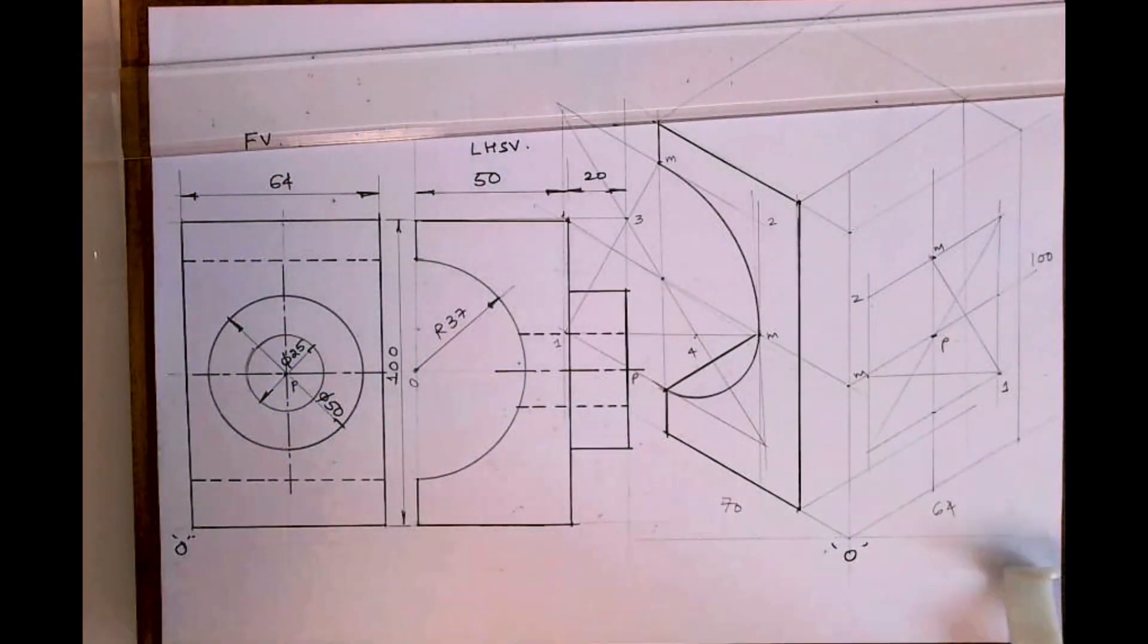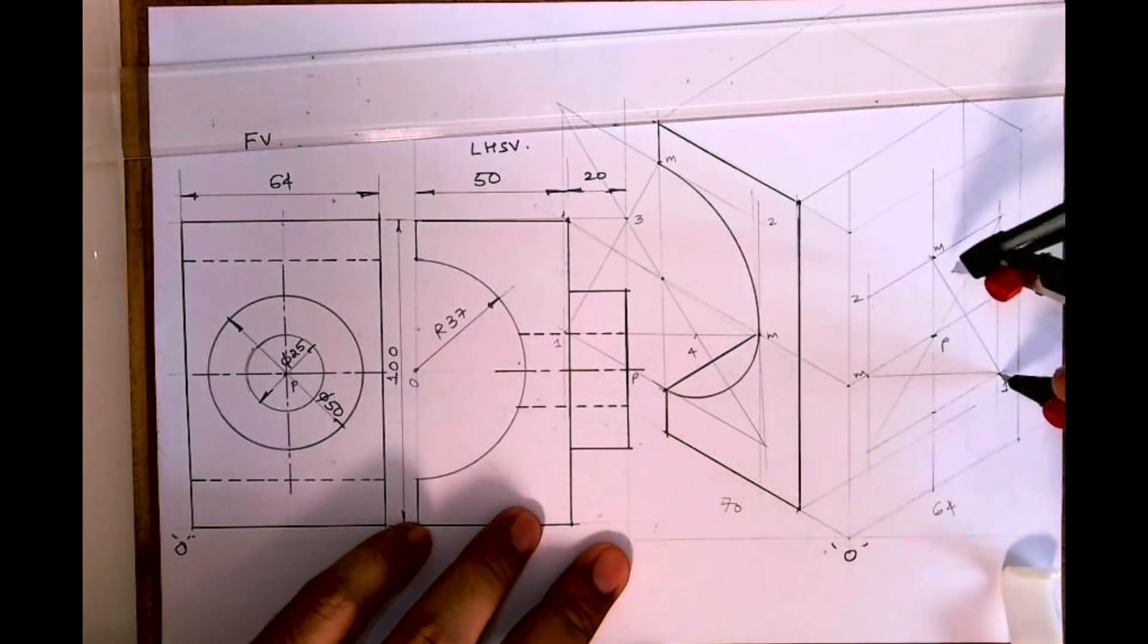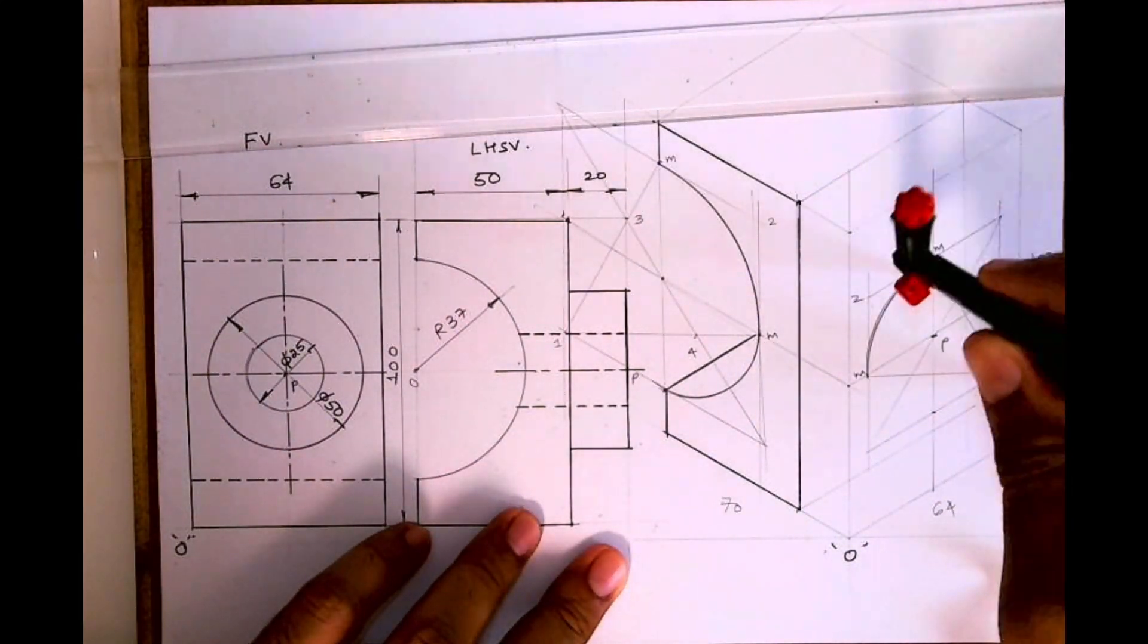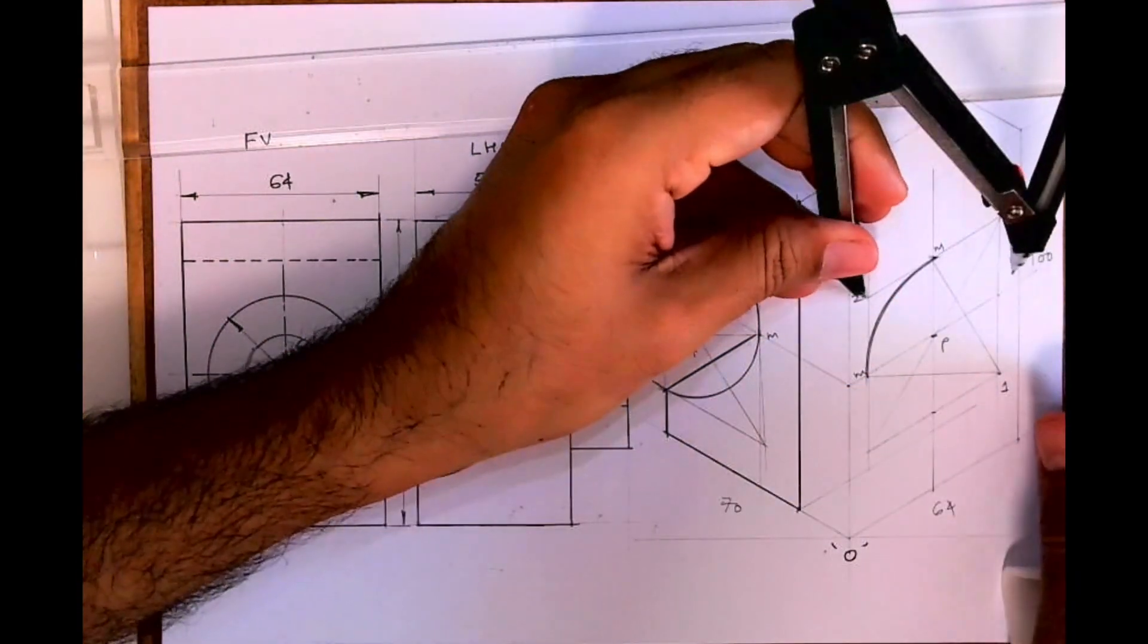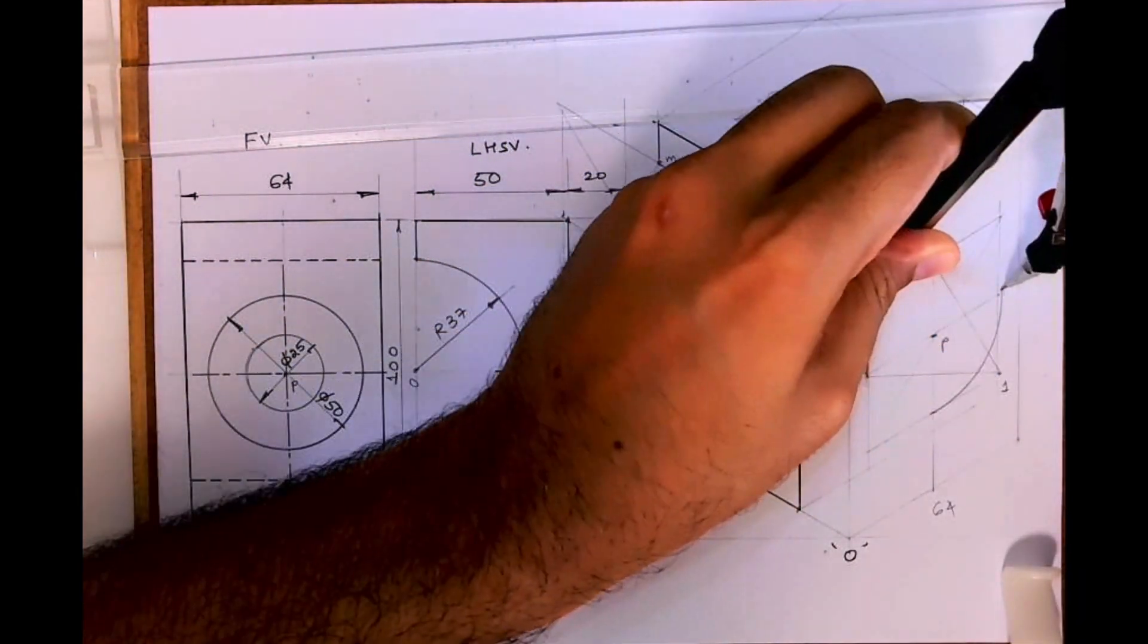Now you take one to M and draw arc. Same way you take two to M and draw arc.